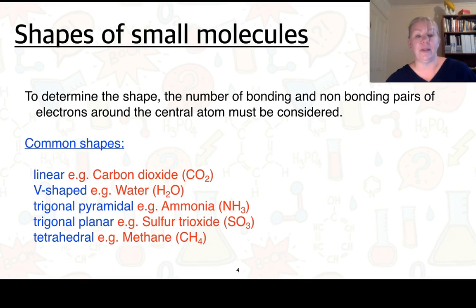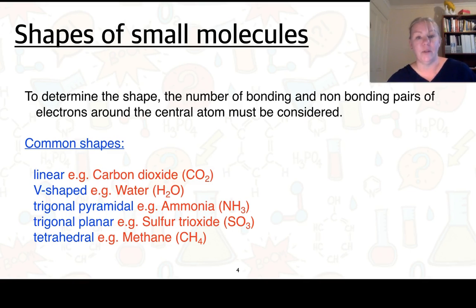Let's have a look at some shapes of small molecules. To determine the shape, we need to look at the bonding and non-bonding pairs of electrons around the central atom. So if we've got carbon dioxide, carbon is our central atom with two oxygens around it — it's going to be linear shaped. Water is going to be V-shaped. Ammonia is trigonal pyramidal, sulfur trioxide is trigonal planar, and methane is tetrahedral.